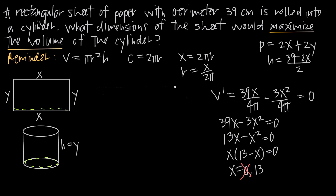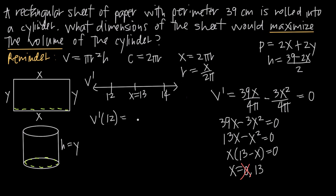To apply the first derivative test, we create a number line and plot our critical point x = 13 in the middle. We pick test values on either side — x = 12 and x = 14 — and plug them into V'. Let's evaluate V'(12) = 39(12)/(4π) − 3(12²)/(4π).